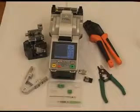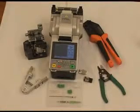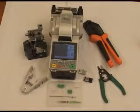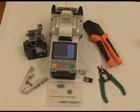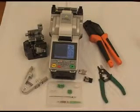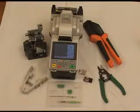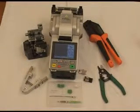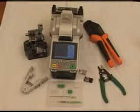In the demonstration you just saw, the following Phytel components were used to complete this process: The S177 handheld core alignment fusion splicer, the Phytel 325 single action cleaver, the connector assembly tool, the 3mm splice-on connector kit, the cordage and ferrule holders, the 3 hole stripping tool, and finally the crimp tool.